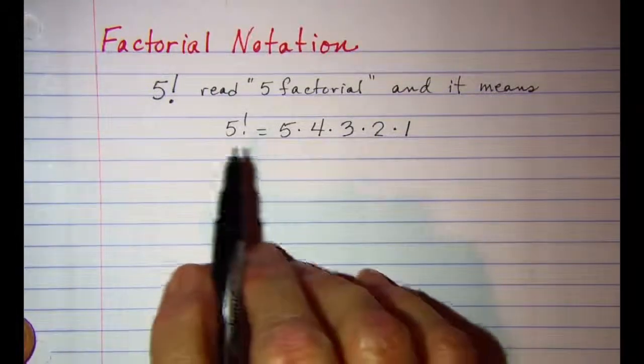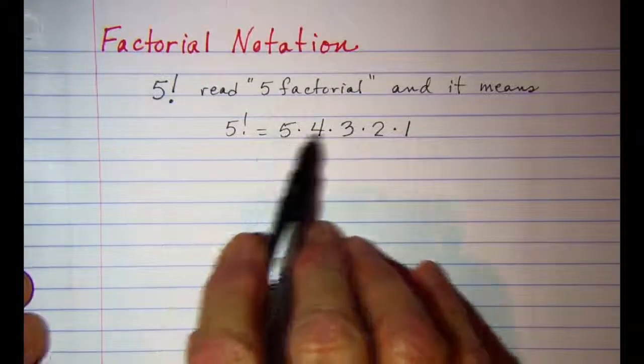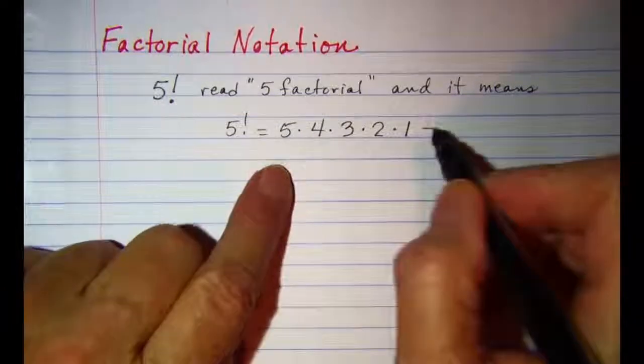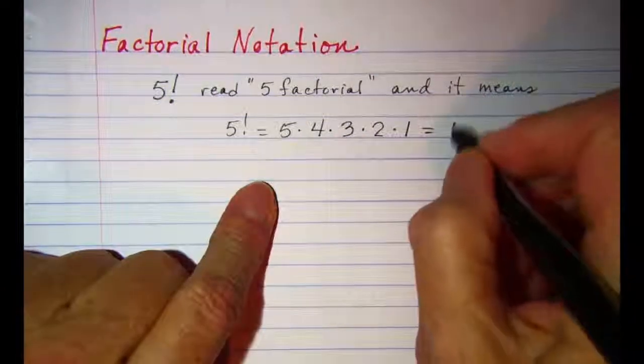When you're doing factorial, 1 is always the last factor, so 5 factorial is equal to 20 times 6, or 120.